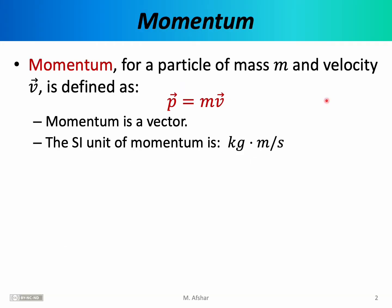Let's begin with the definition of momentum. Momentum for a particle of mass m and velocity v is defined as mass times velocity. We use the letter p to denote momentum. We put an arrow over the letter p to remind ourselves that it's a vector, and therefore like all vectors it has a magnitude and an orientation, or it has x and y components.